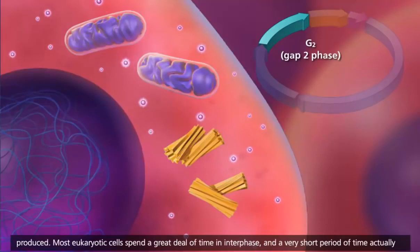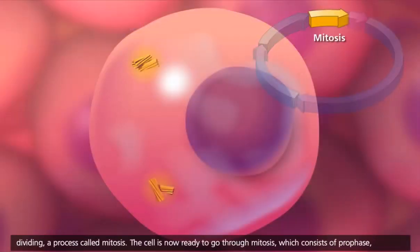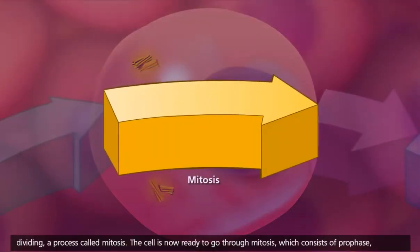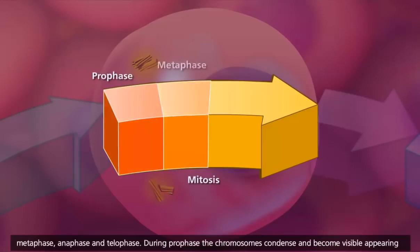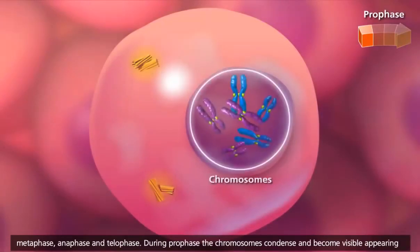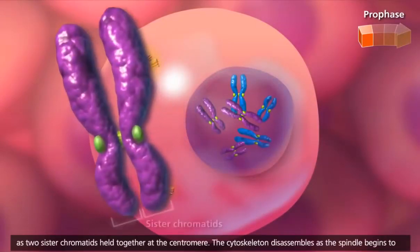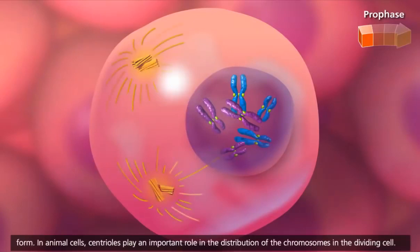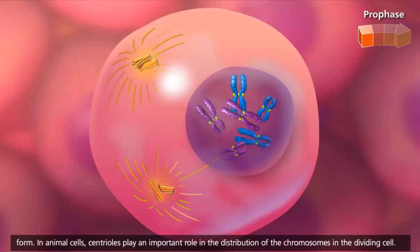Most eukaryotic cells spend a great deal of time in interphase and a very short period of time actually dividing, a process called mitosis. The cell is now ready to go through mitosis, which consists of prophase, metaphase, anaphase, and telophase. During prophase, the chromosomes condense and become visible, appearing as two sister chromatids held together at the centromere. The cytoskeleton disassembles as the spindle begins to form. In animal cells, centrioles play an important role in the distribution of the chromosomes in the dividing cell.